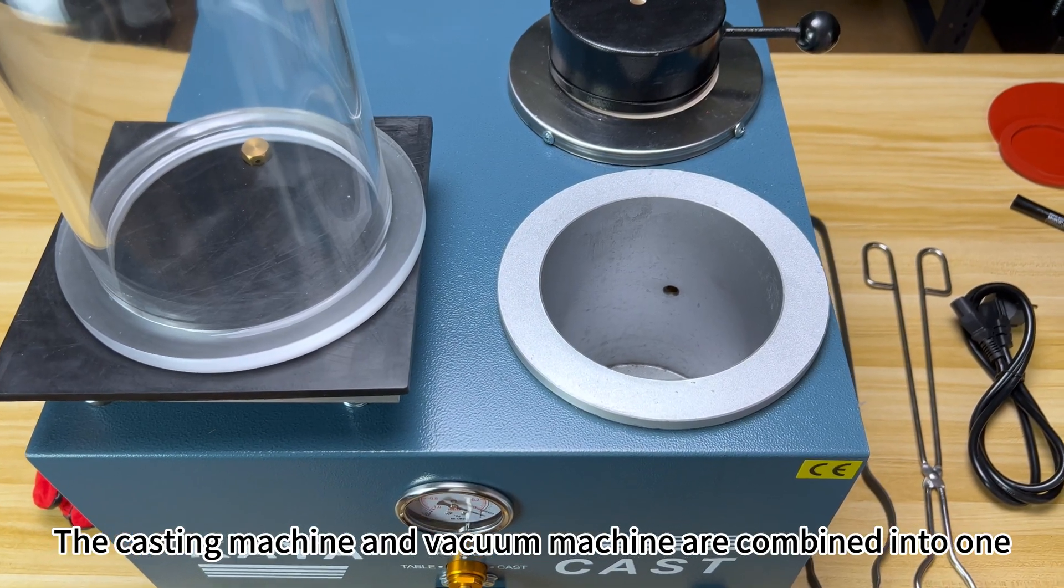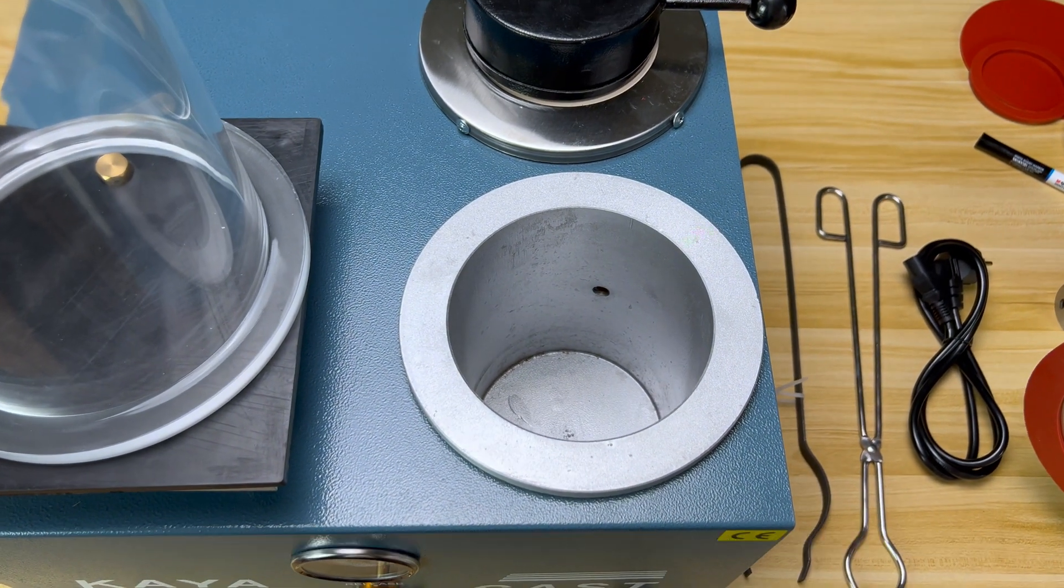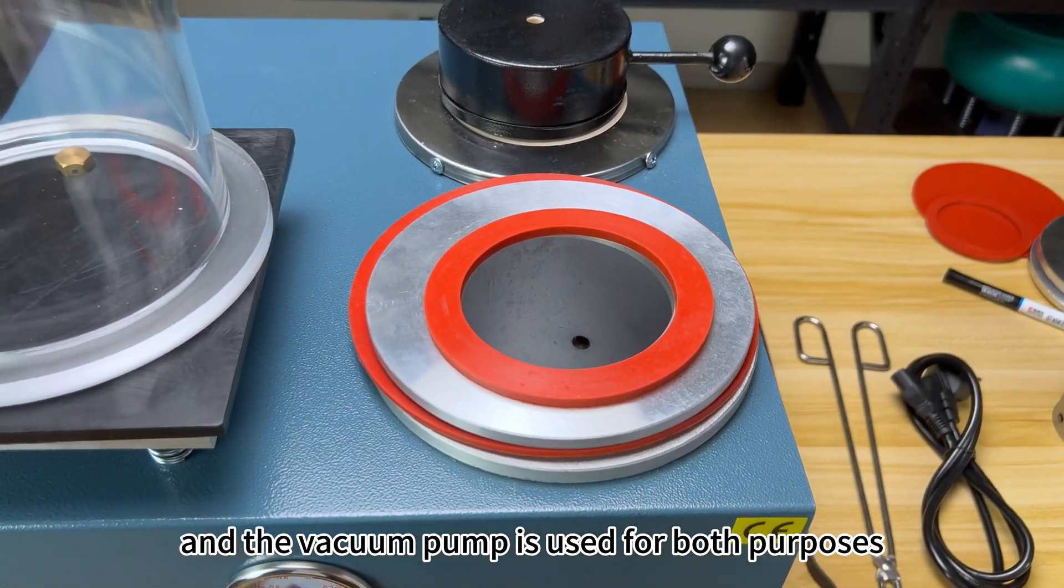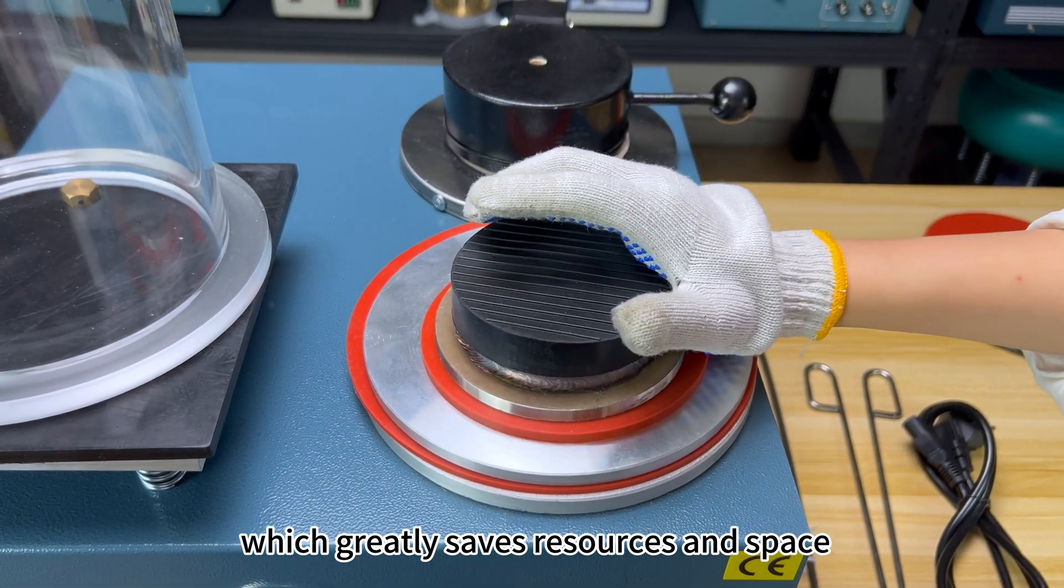The casting machine and vacuum machine are combined into one, and the pump is used for both purposes, which saves resources and space.